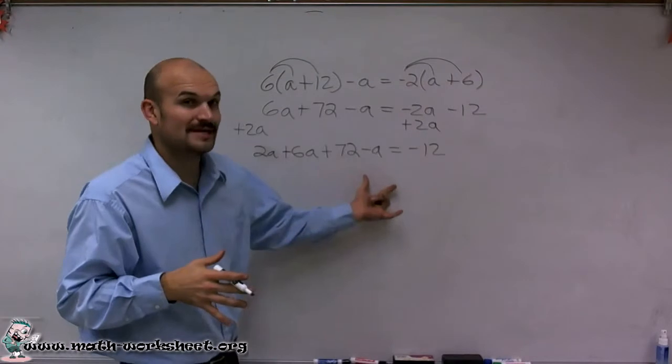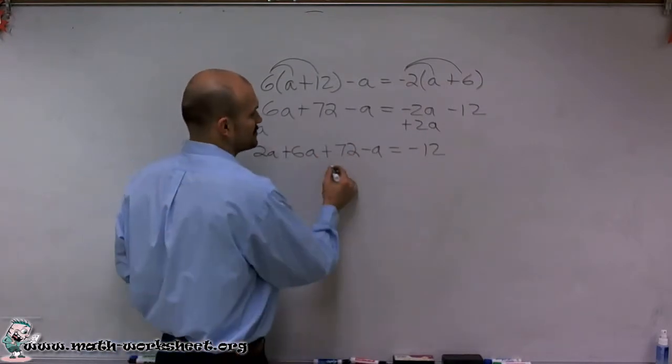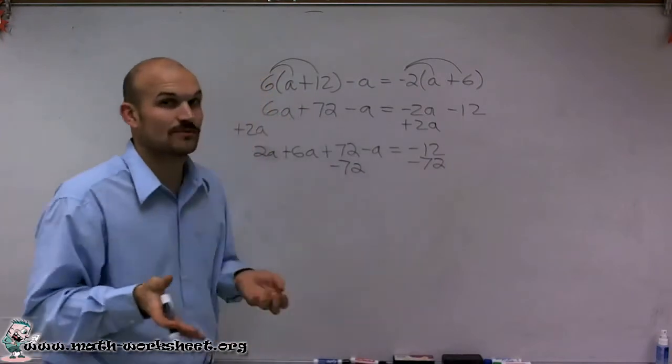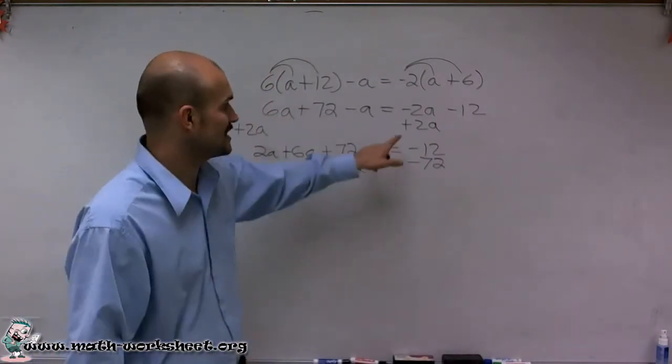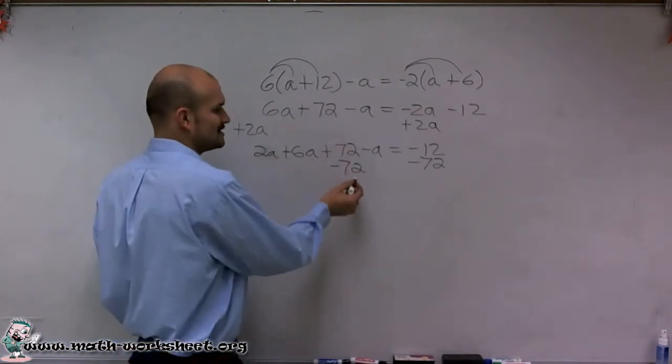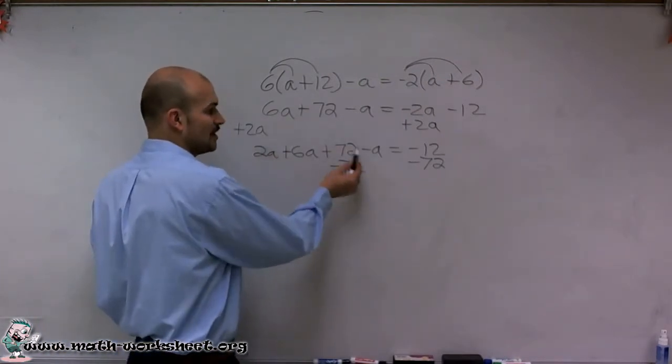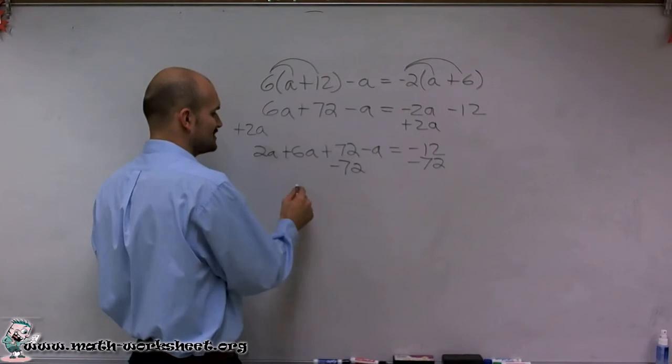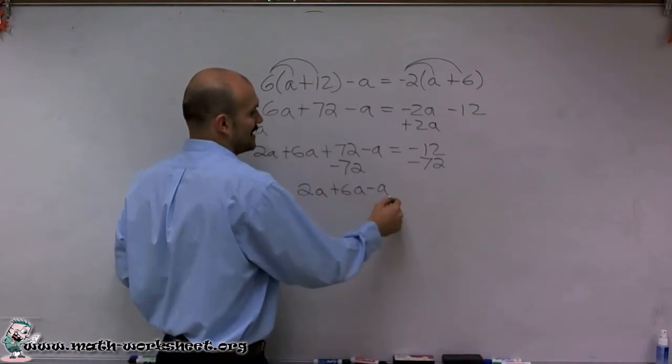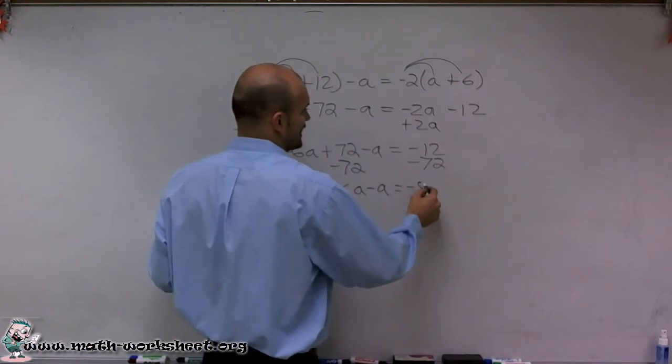Then I almost have all the a's by themselves, but before I do that, I'm going to subtract the 72 on both sides. And remember, it's an equation. So whatever you do on one side, you have to do on the other side, like adding the 2a onto both sides. Now by subtracting the 72, that's going to give me 0. So therefore, I'm no longer going to have this 72. Therefore, I have 2a plus 6a minus a equals a negative 84.